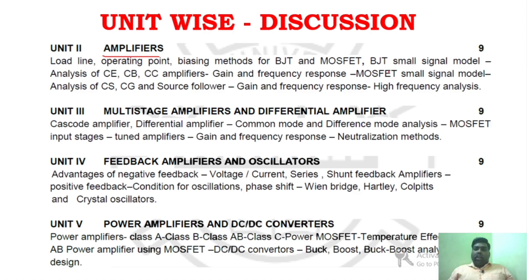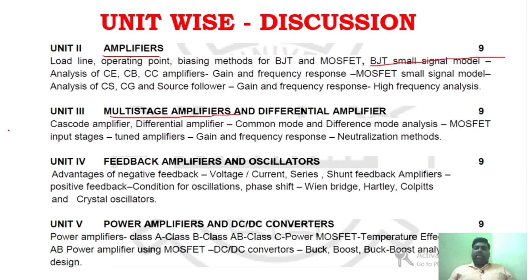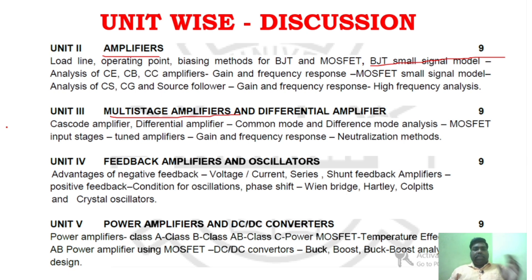In unit 2, you have to understand small signal model analysis — specifically BJT small signal analysis as well as MOSFET small signal model. Similarly, unit 3 covers some challenging content, but if you are clear with the differential amplifier concept and MOSFET input stages concept, you will definitely manage. Unit 4 is one of the easiest units.